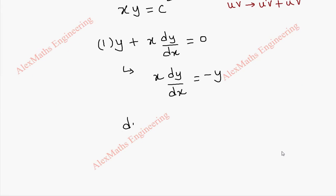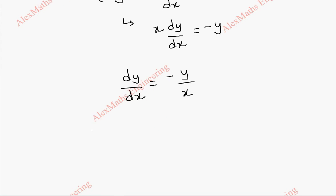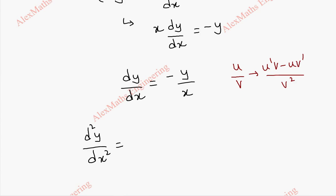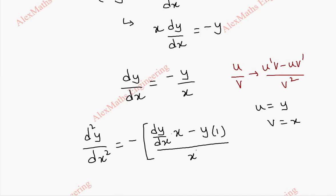From this we get dy by dx equal to minus y by x. Now we have to apply the quotient rule for finding the second derivative d square y by dx square. The quotient rule is: u by v gives u dash v minus u v dash, all divided by v square. Here u is y and v is x. Keeping the minus sign separate, u dash is dy by dx, v is x as it is, minus u which is y, times v dash which is 1, all divided by v square which is x square.